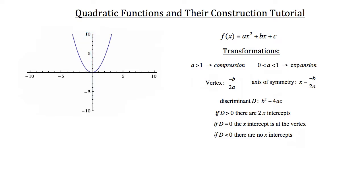You should also recall the discriminant, written as D = b² - 4ac. If the discriminant is greater than 0, your graph has two x-intercepts. If it equals 0, the x-intercept is at the vertex — you have only one x-intercept, as in our particular graph here where we touch the x-axis at the vertex. If the discriminant is negative (less than 0), there are no x-intercepts and your graph never crosses the x-axis.